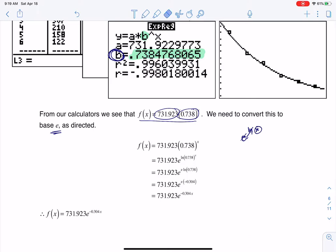So what we wind up doing is we're going to take this expression, and I'm going to write this as 731.923, and then I'm going to put an e and an ln here. So again, keeping in mind those would have canceled out, I make my argument 0.738 to the x. And it's a different way of rewriting this expression. Those two expressions are the same.